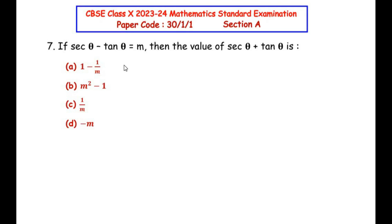The seventh question is from the introduction to trigonometry chapter. If sec θ - tan θ = m, then the value of sec θ + tan θ is — and the answer must be in terms of m. We begin by noting the given: sec θ - tan θ = m.